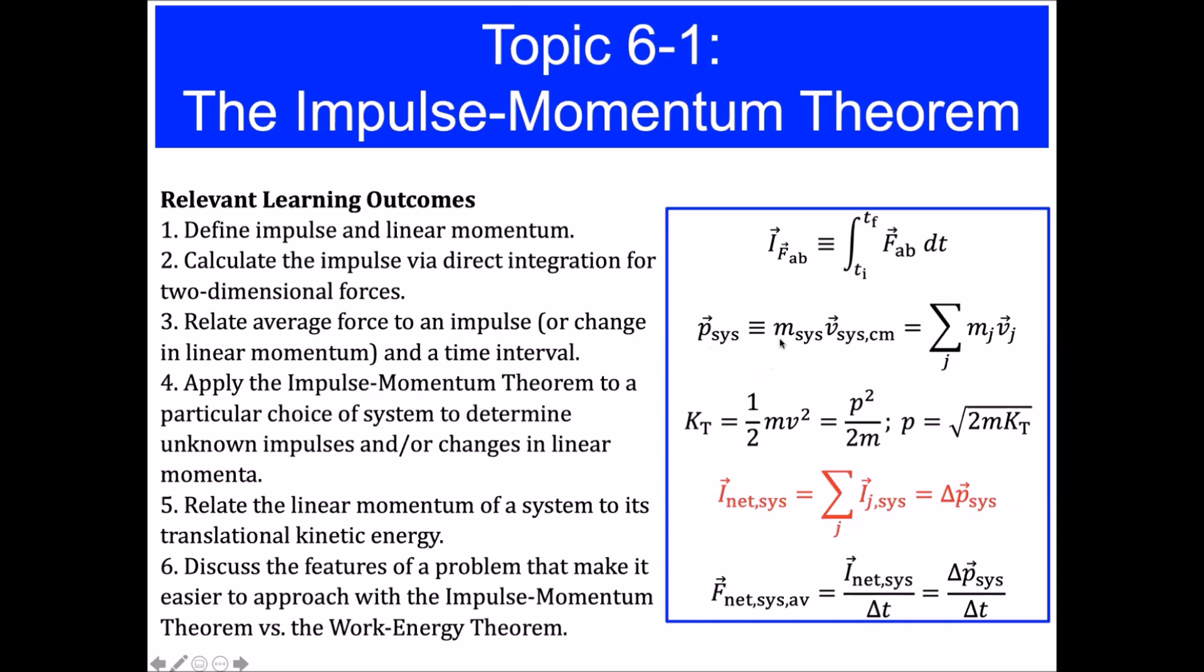We can relate the translational kinetic energy of a system or an object, one half the mass times the speed squared, to the magnitude of the linear momentum squared divided by twice the mass of the object or the system. And so we've got that relationship between translational kinetic energy and the magnitude of the linear momentum vector, and likewise we can write the magnitude of the linear momentum vector in terms of the mass of the object and the translational kinetic energy of the object.